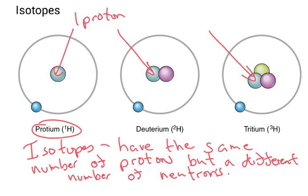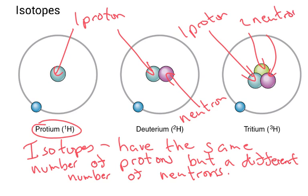In deuterium, there's one proton and a neutron. And in tritium, there's actually one proton and two neutrons. And that actually makes tritium radioactive.